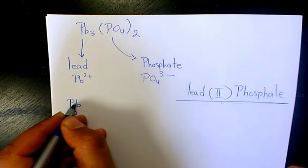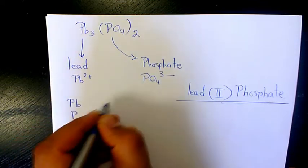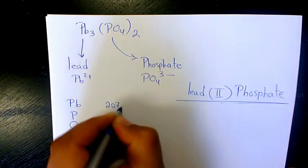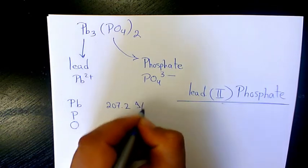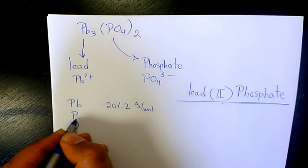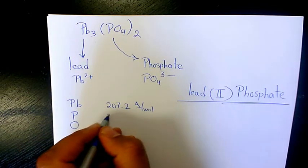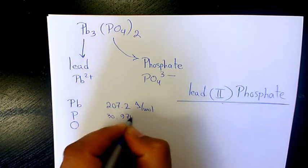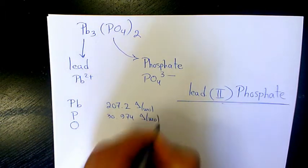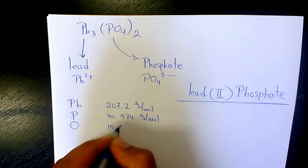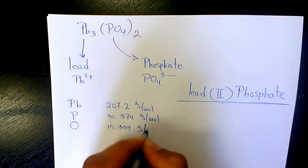The atomic mass of Pb is 207.2 grams per mole. Phosphorus is 30.974 grams per mole. And oxygen is 15.999 grams per mole.